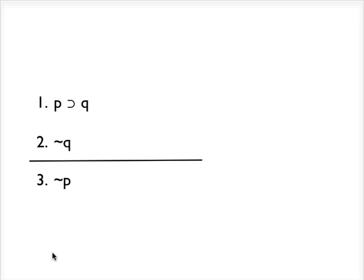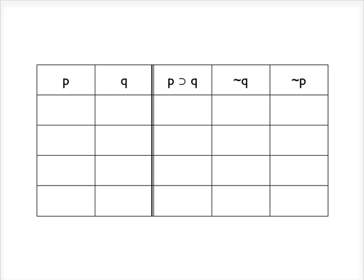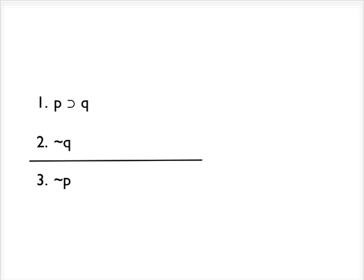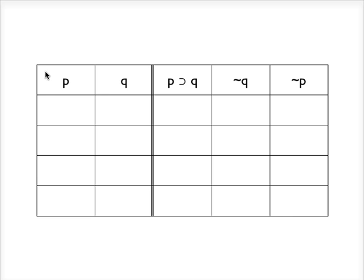The first step is to construct your truth table, and in order to do that, you have to create two reference columns, P and Q. The reason you have two is because you only have two atomic components. The only atomic components in this argument are P and Q — every other sentence here we can build out of those basic atomic components.